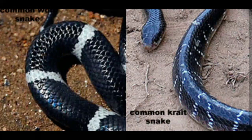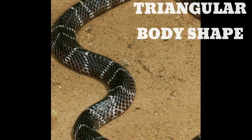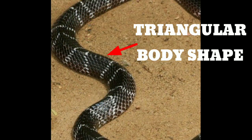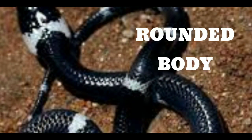Body shape: the body of a common krait snake is somewhat triangular and ridged along its vertebral line. In the common wolf snake, the body is roundish and there is no ridge formation.